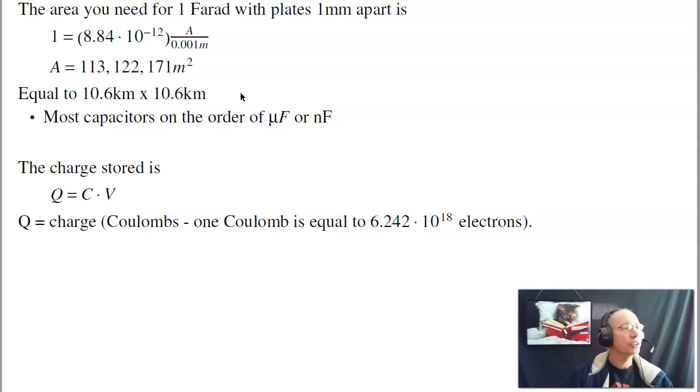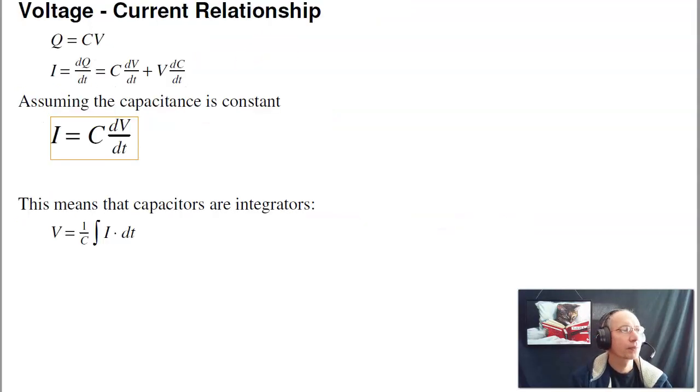The charge stored in a capacitor is the capacitance times voltage. Here charge is in coulombs, where one coulomb is 6.2 times 10 to the 18th electrons. Once I have charge equals capacitance times voltage, I can find the VI characteristics. Take the derivative, coulombs per second is amps. Assuming C is a constant, I get I equals CdV/dt. That's the basic equation for capacitors. The current is the change in voltage.